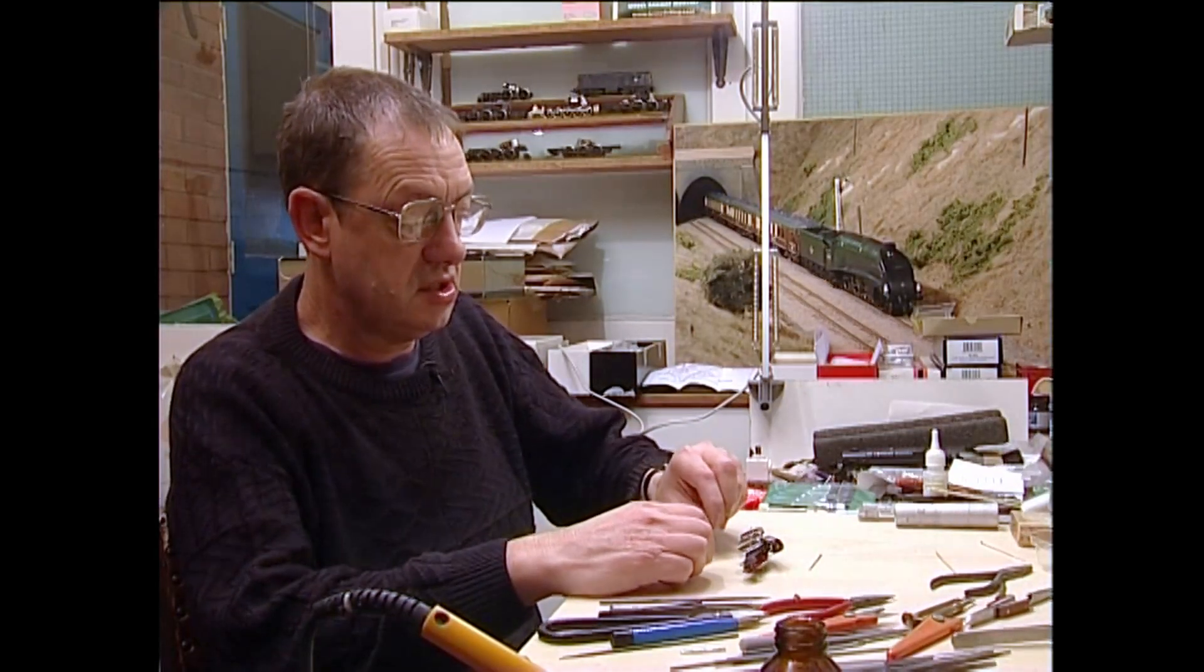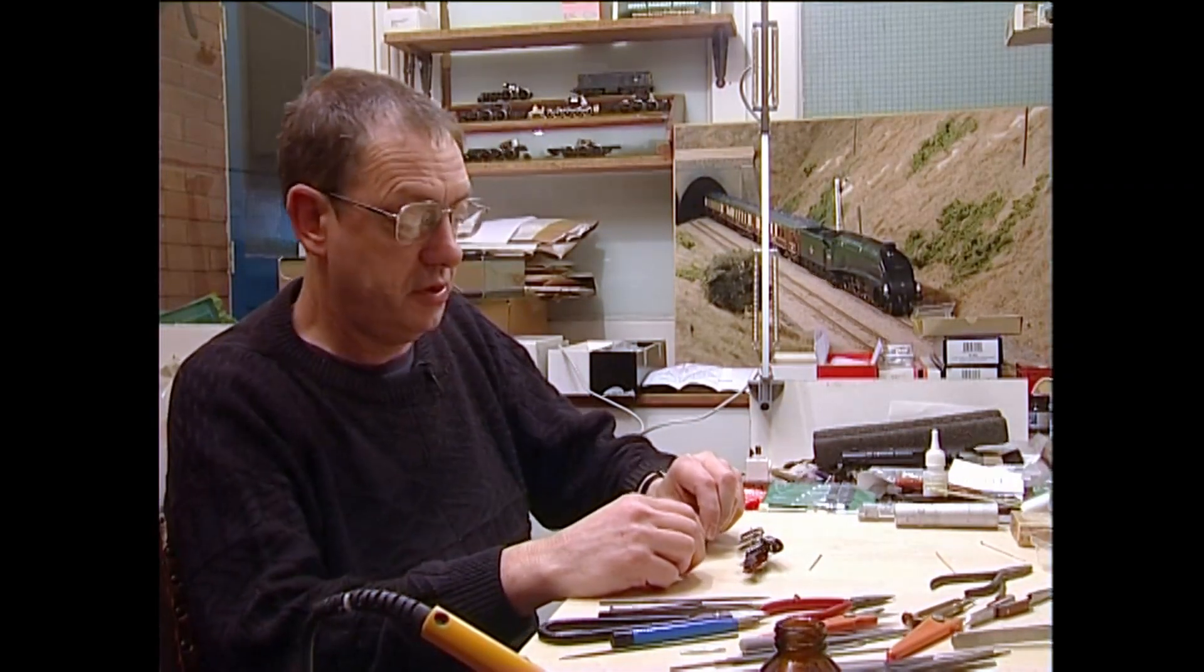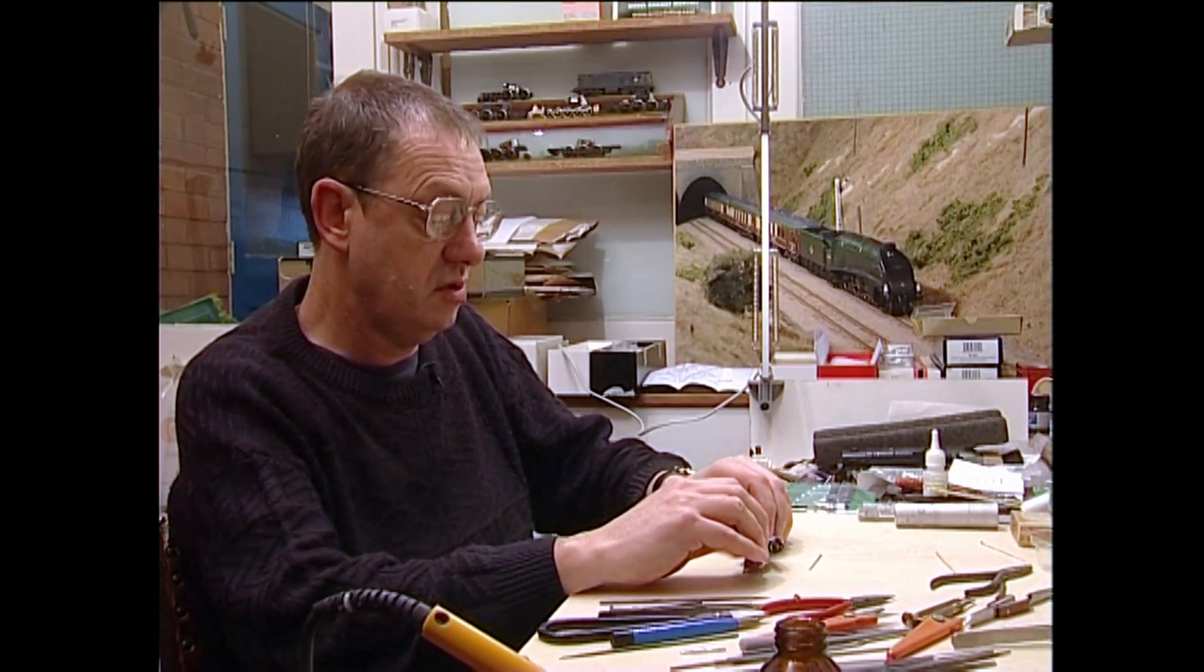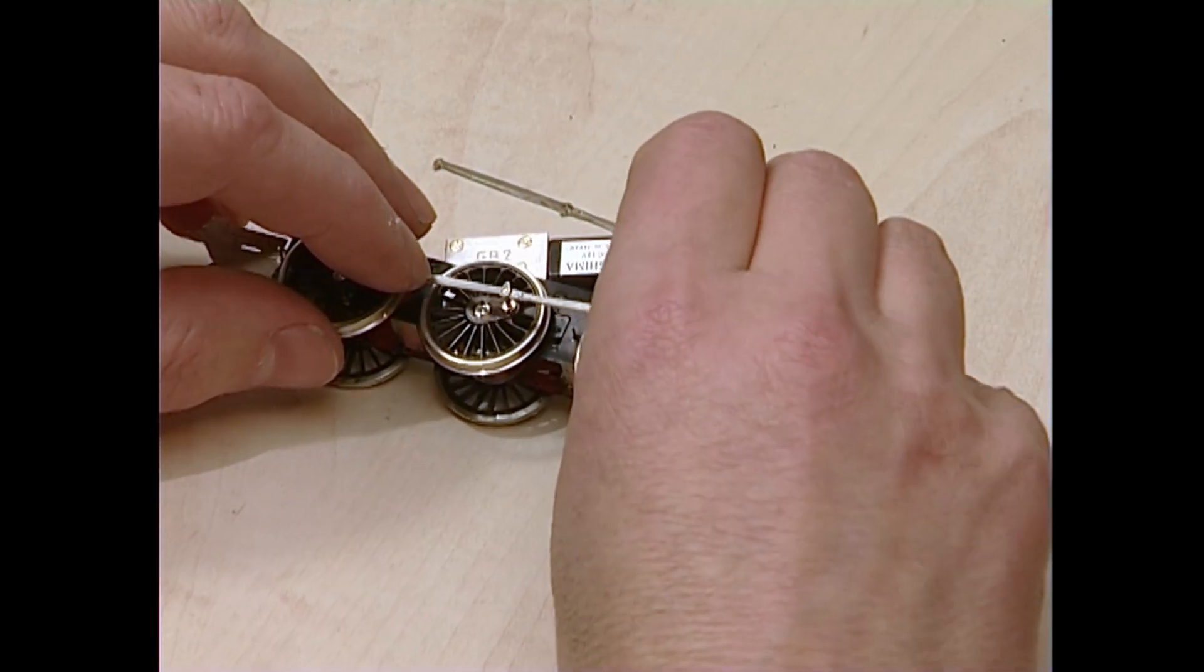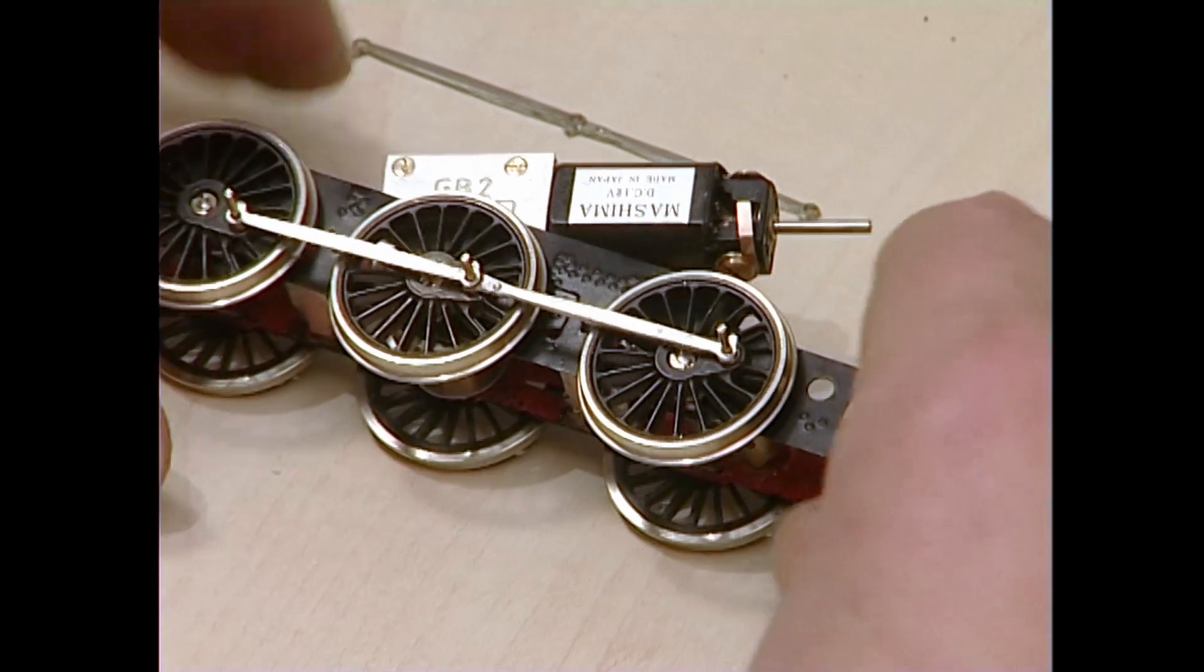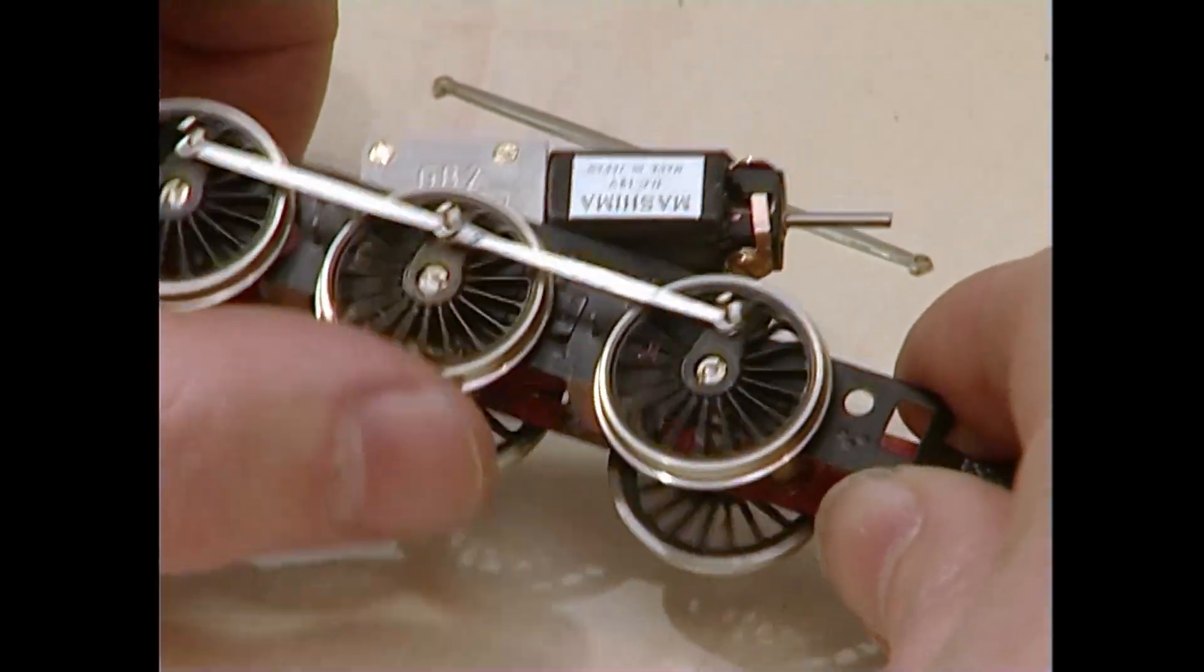The next stage is to temporarily fit the coupling rods. Now it's essential that there's no friction on these whatsoever. No tight spots, no binding. Fix temporarily, one at a time.